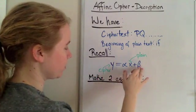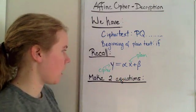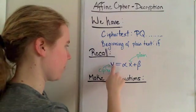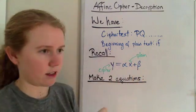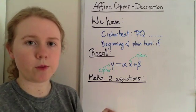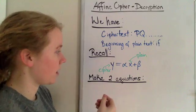Now also recall that the formula for the affine cipher is y equals alpha x plus beta, where the y is the ciphertext, where it's the number that represents a letter from the ciphertext, and the x is the number that represents the plaintext letter.